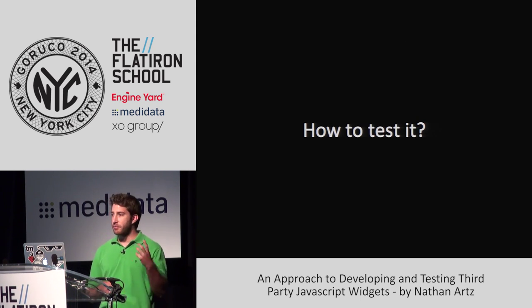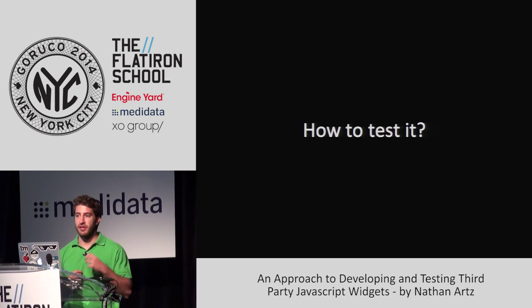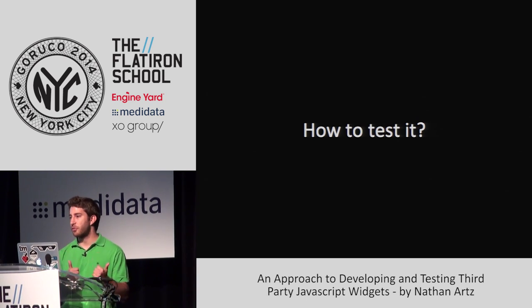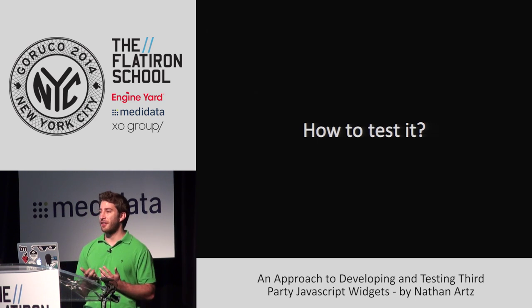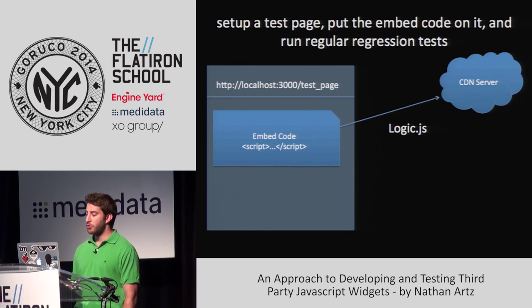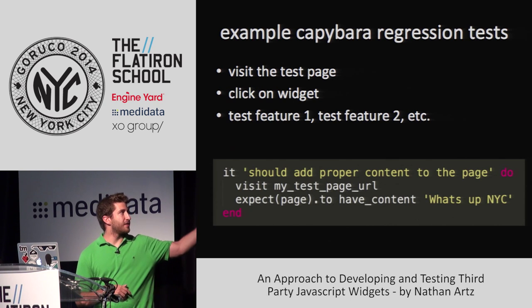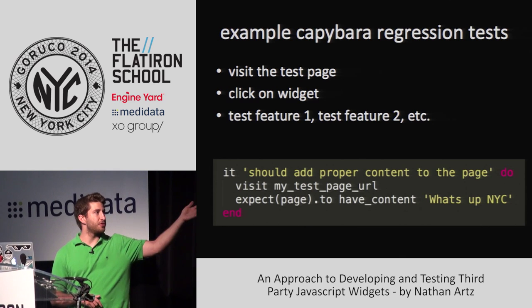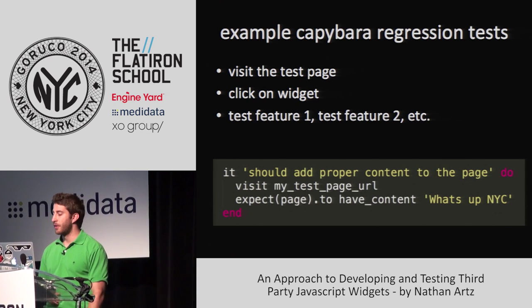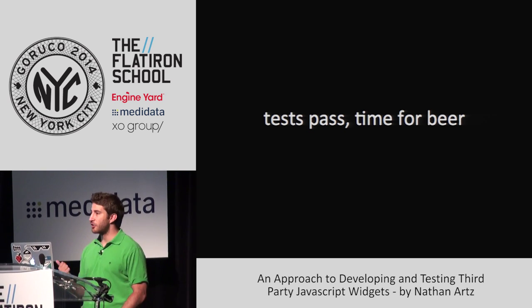So how would we go about testing this? We have this embed code and it's going to load another JavaScript. Ultimately, the way we want to test it is on the client page — we give it to the client and we know for 100% sure it's going to work on their page. As a reasonable idea, we set up our own test page. If you're in Rails, you create some view and put the embed code in there. We create some tests — if you're familiar with Capybara, we create a test that visits our test page and expects it to have content, because that's what our embed code was supposed to do. You can test all your features, your tests pass, 100% code coverage, and you start drinking a beer.